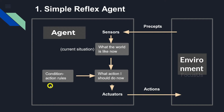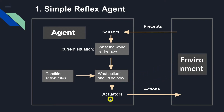After the current situation of the environment is known, we can apply the condition-action rules — the if-then rule. After the rules are applied, the agent knows what action it should take. So the agent decides what kind of action needs to be done in the environment, and that action is carried out on the environment with the help of actuators. This is how a simple reflex agent performs its tasks.